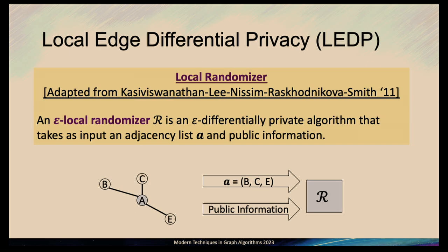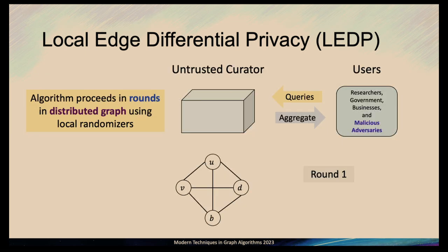Let me define local privacy for graphs more formally. We define local edge differential privacy, which relies on the definition of a local randomizer. An epsilon local randomizer is an epsilon differentially private algorithm that takes as input an adjacency list A (your private data) and some public information, and outputs epsilon differentially private outputs. For example, local randomizer R for node A takes the private adjacency list of A and some public information, and outputs privatized outputs.